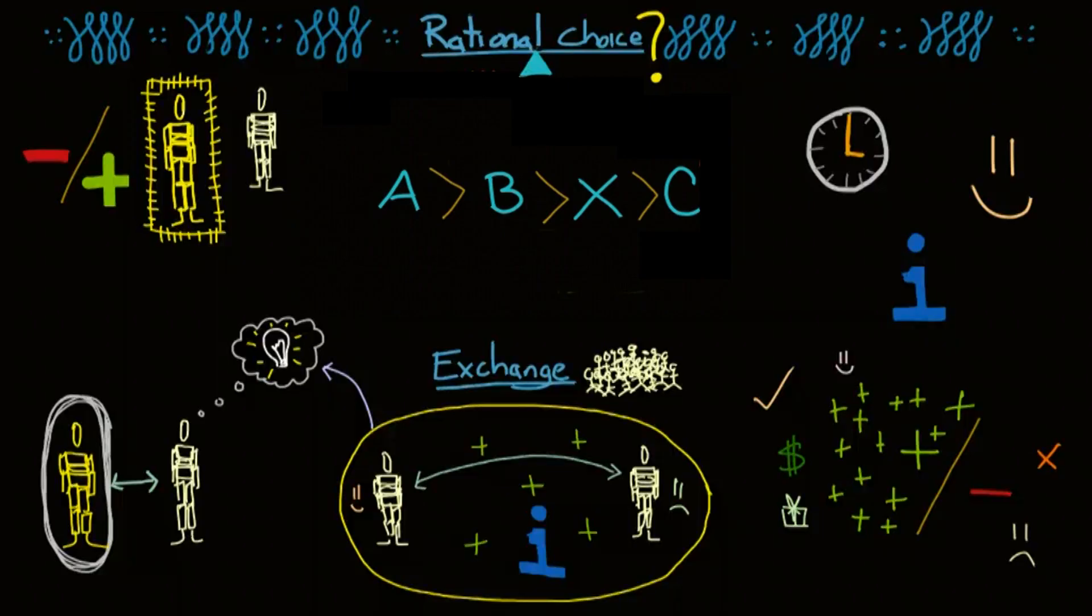Critics of exchange theory dislike that it reduces all human interactions to a rational process of comparing pros and cons. It also tries to put the formation of relationships into a linear process, but that isn't always linear. Critics point out that relationships can move backward or jump ahead.